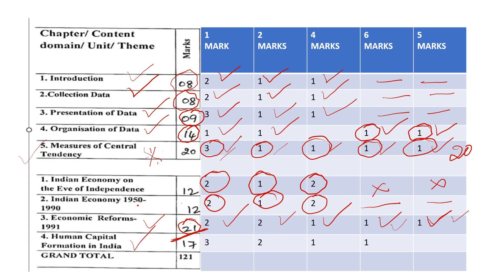Next, Human Capital Formation. The third highest marks are in this E chapter. The E chapter is 6 marks, 4 marks, 2 marks, 2 marks, 1 mark — 3 questions. So this chapter requires your full preparation.